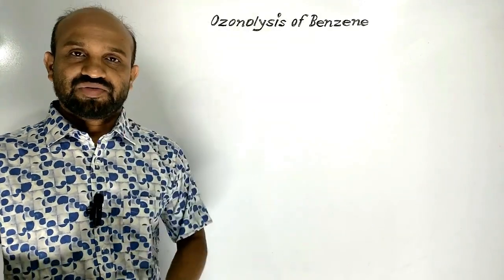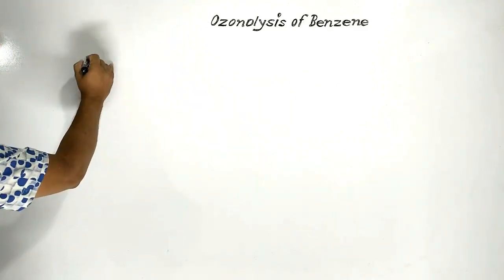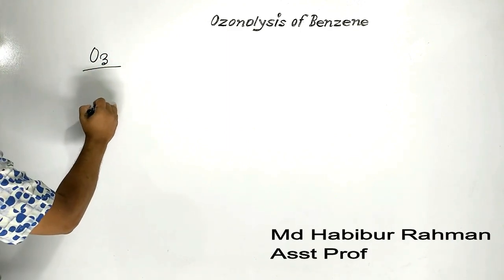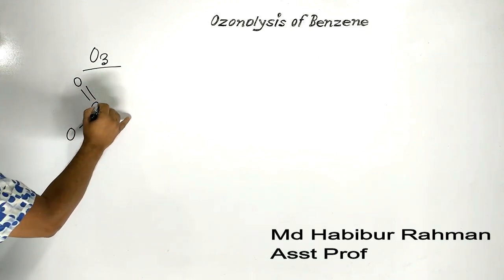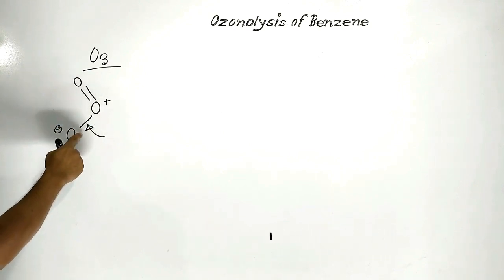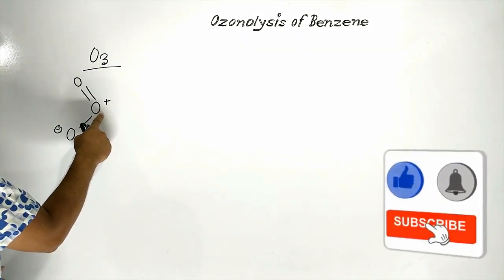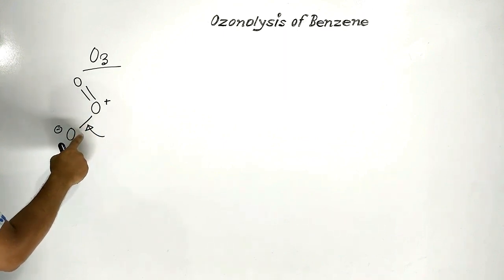Ozonolysis of benzene. First of all, let us see the hybrid structure of ozone. This is ozone. The structural formula may be like this. This bond is a kind of coordinate covalent bond, which is formed by this oxygen — this oxygen donated one pair of electrons to this oxygen, and as a result this coordinate covalent bond is formed.